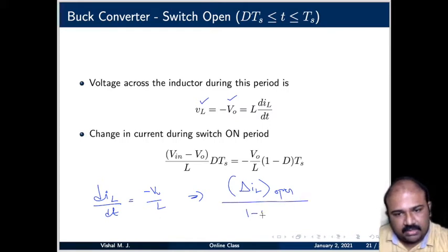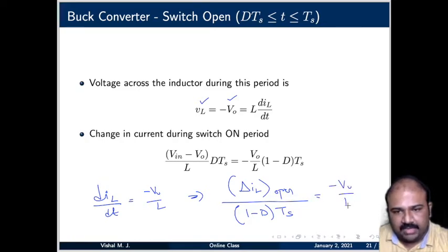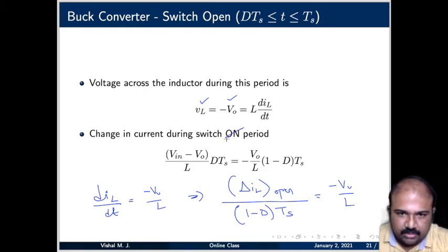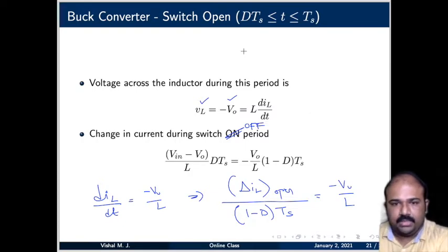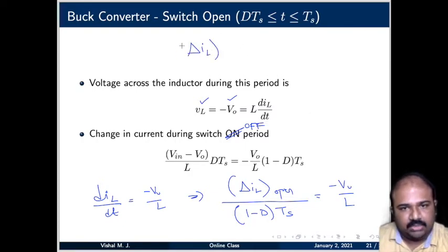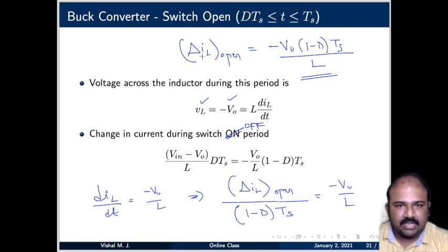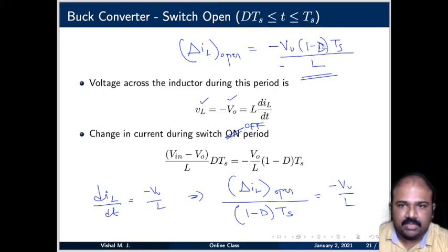The ripple current when the switch is open: ΔiL/dt = −V0/L, and the time for which the switch is open is (1−d)Ts. So ΔiL(open) = V0·(1−d)·Ts/L. We have now calculated the ripple current both when the switch is closed and when it is open.